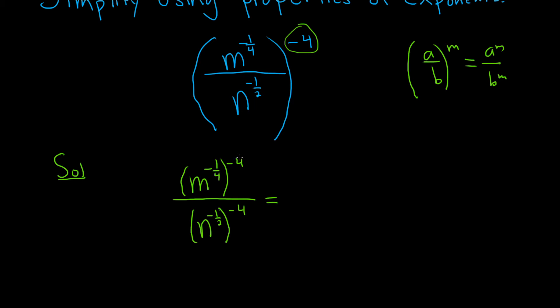So negative four times negative one-fourth. Well, negative four times negative one-fourth is just one. So it's just m to the 1 over,